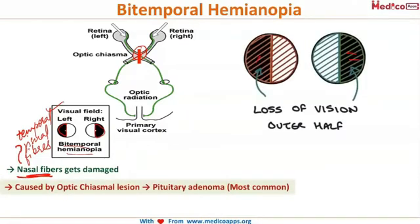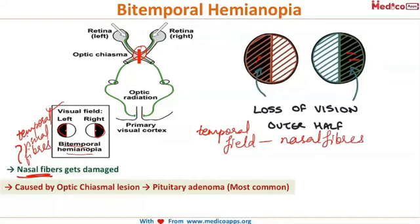The temporal field is always given by your nasal fibers. So both nasal fibers must be damaged for this field loss to occur, which happens where both crossover — at the optic chiasma. The most common reason for this is a pituitary adenoma.